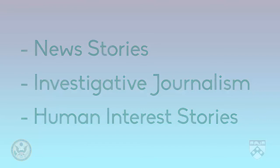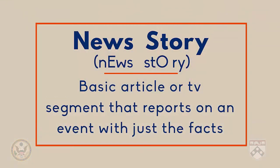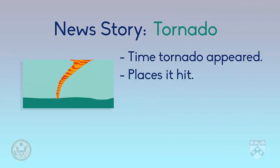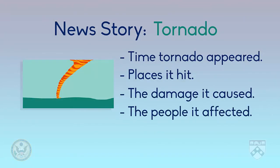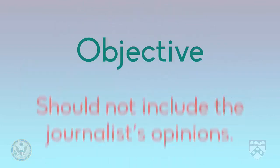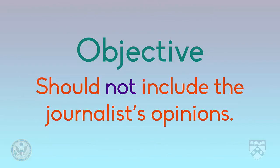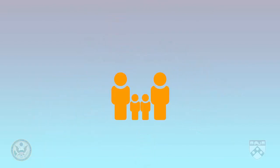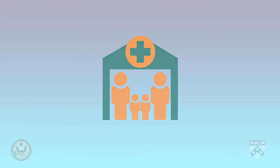The most common type of article is called a news story, which is exactly what it sounds like. It's an article or segment of television news that gives just the facts of an event. For example, a news story that covered a tornado would give the most basic information: the time the tornado appeared, the places it hit, the damage it caused, and the people it affected. A news story should be objective, and therefore should not include the journalist's opinions about the government's ability to provide safe places for citizens, or reviews on products to buy to help prepare for an emergency event. A news story is the simplest, and most often the shortest type of story — just the facts.